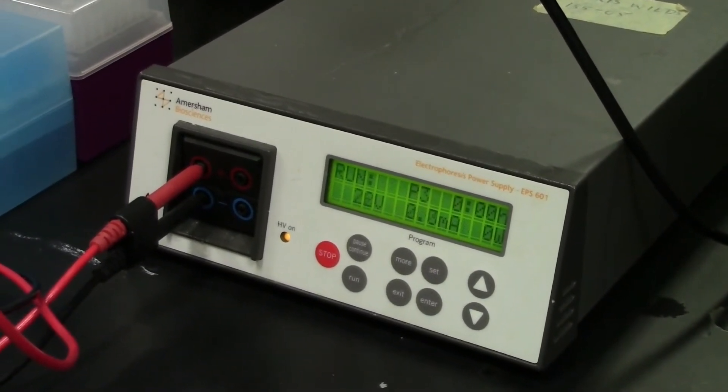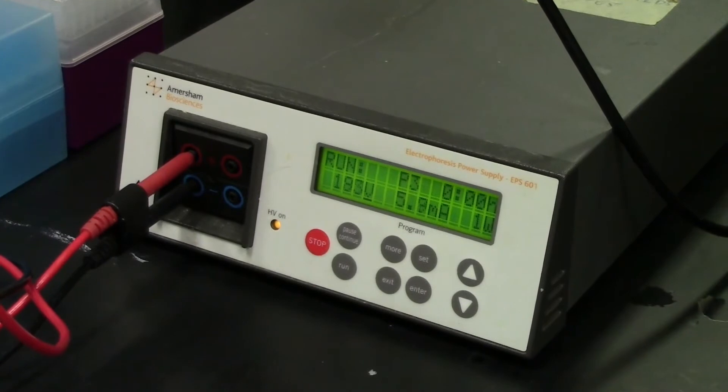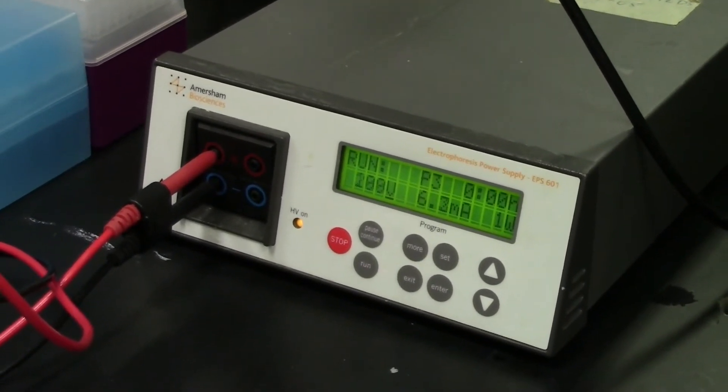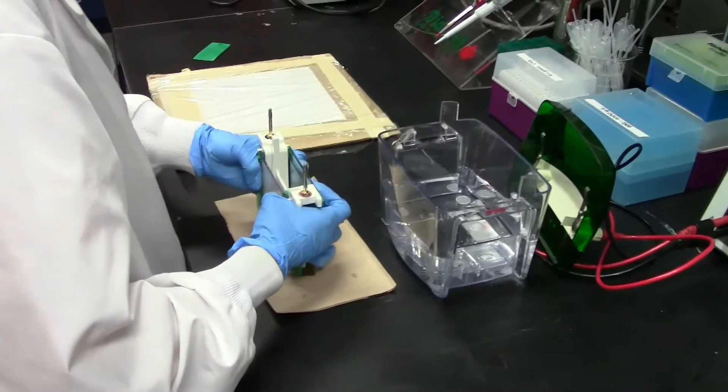Although dependent on your samples, we typically run the gel until the dye band is about three quarters of the way through the gel because our oligos vary from 5 to 30 nucleotides.